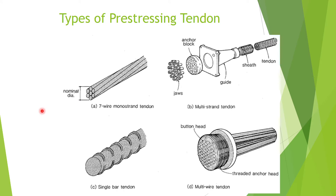These four types are illustrated in four diagrams. Diagram A shows a mono-strand tendon — we have only one strand, so this seven-wire mono-strand tendon is used as a pre-stressing tendon. Diagram B shows a multi-strand tendon, meaning we use multiple seven-wire mono-strands, and these multiples of seven-wire mono-strands are formed and bonded together to form a tendon.